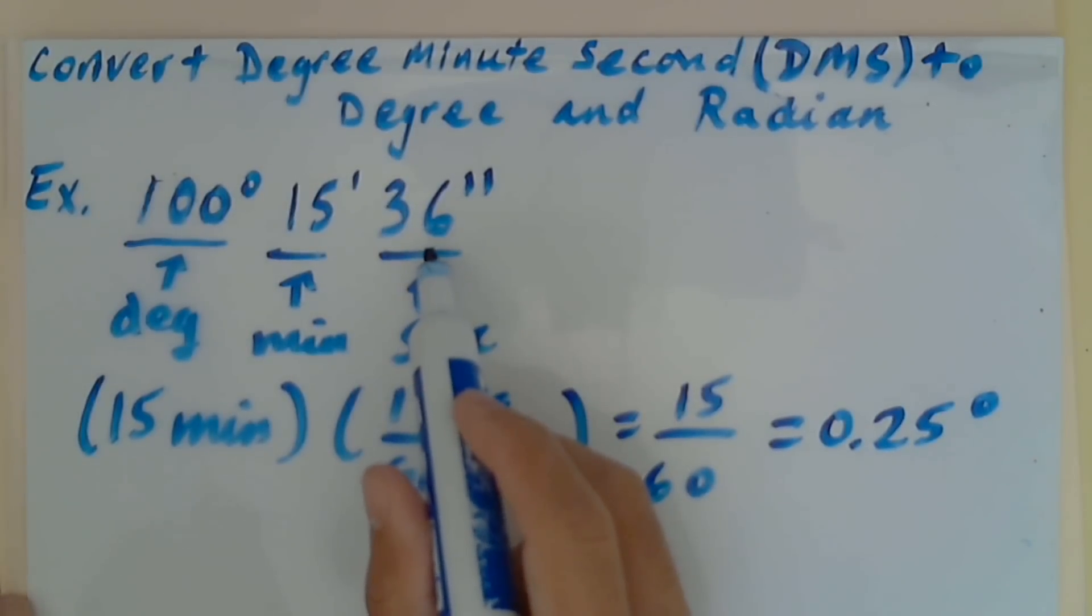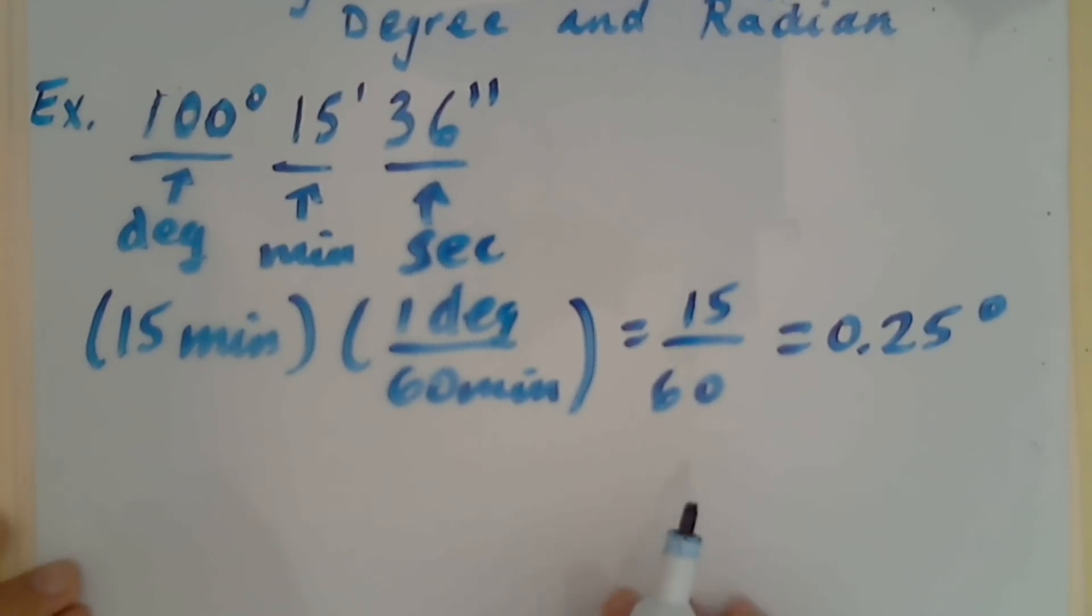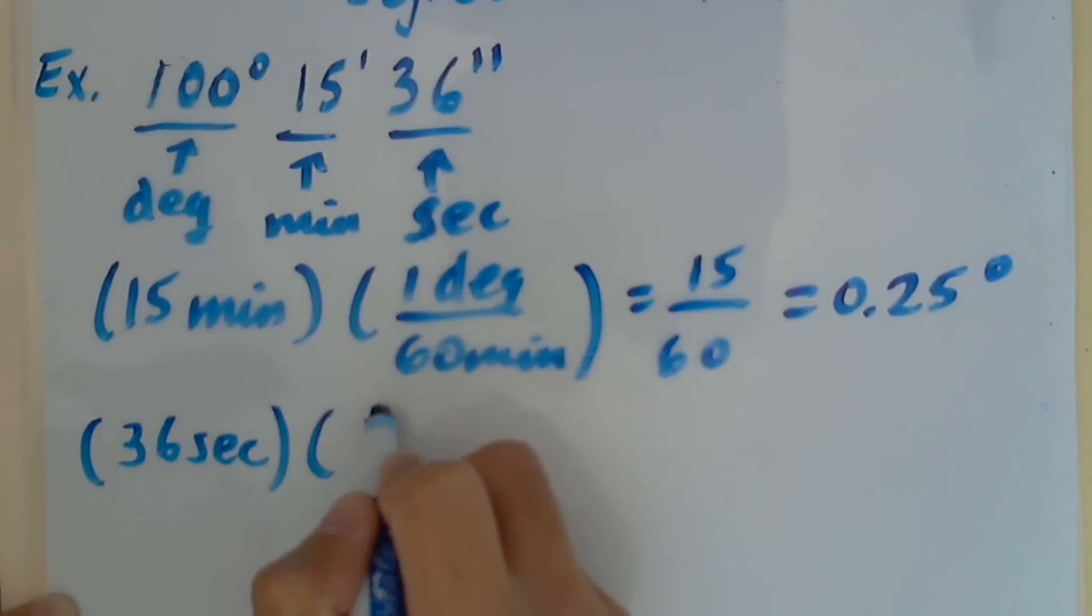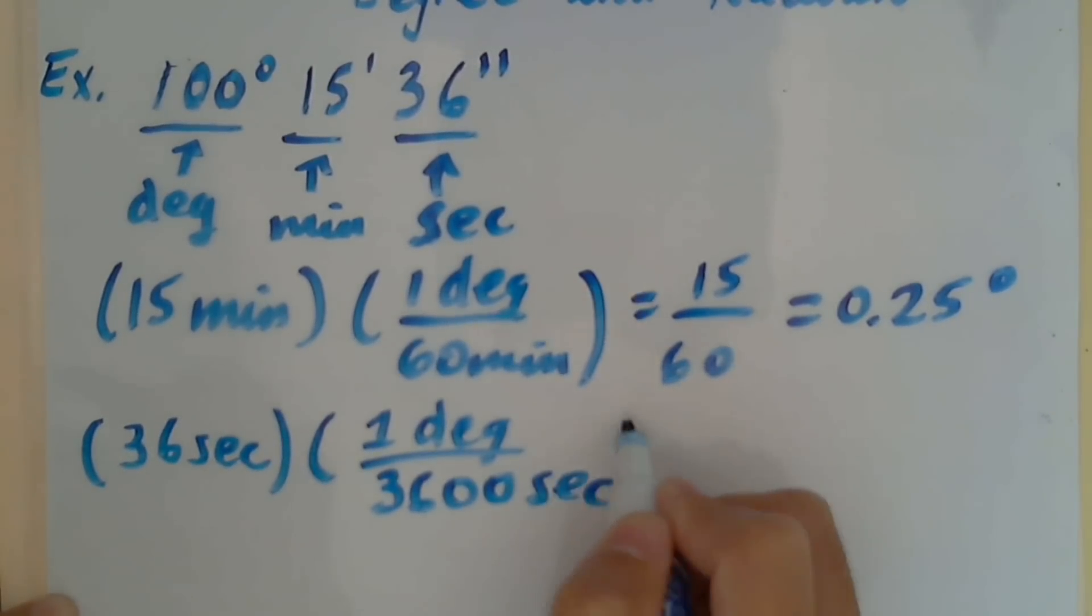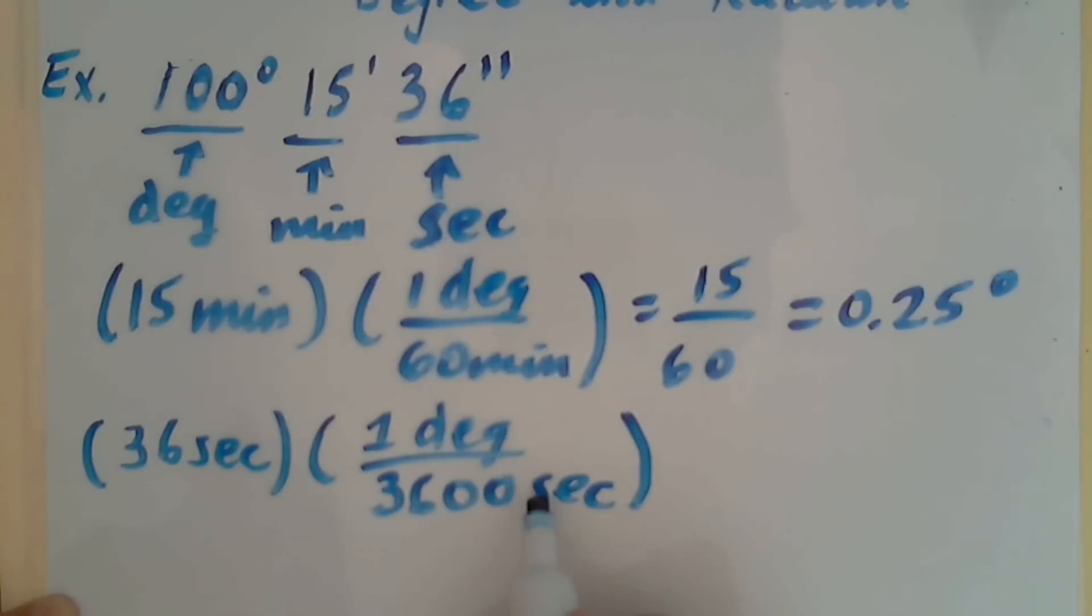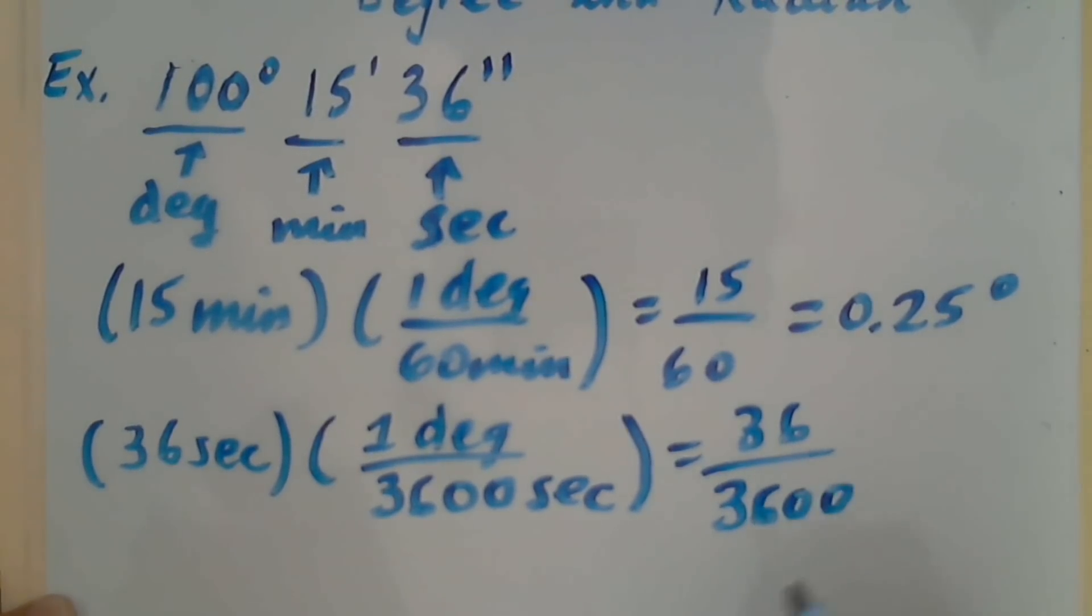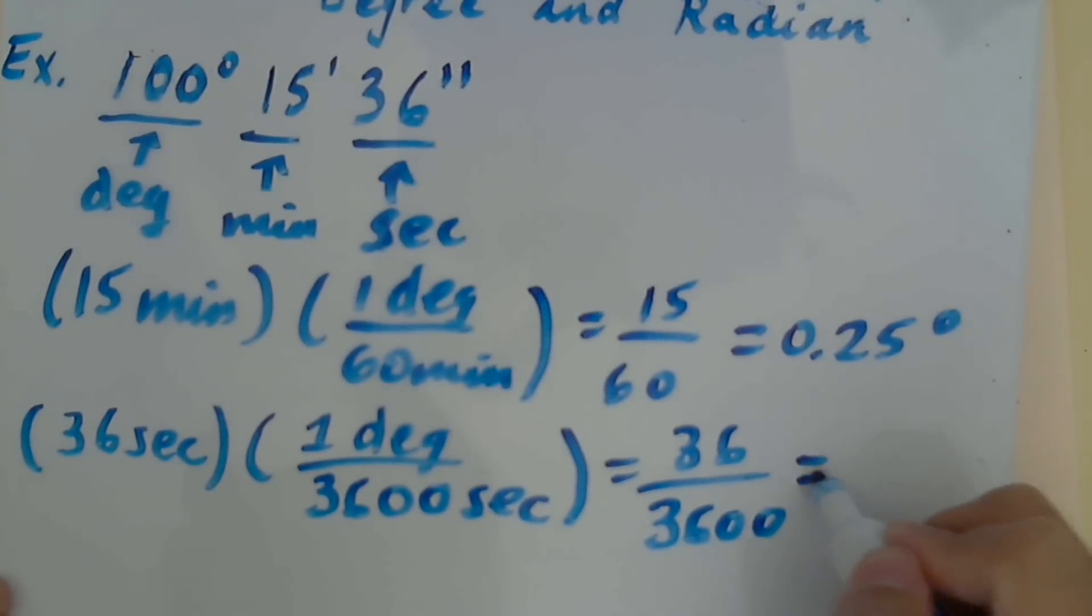Now I will convert 36 seconds into degrees. One degree equals 3600 seconds. Seconds and seconds cancel. I get 36 over 3600, which equals 0.01 degrees.